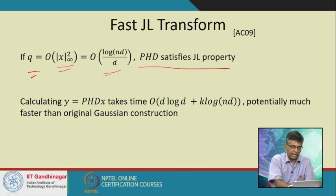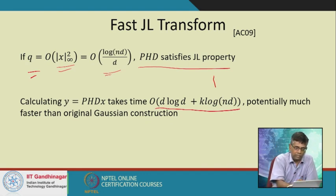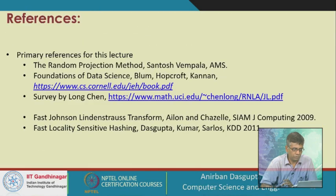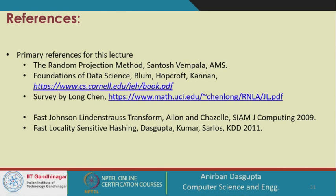Since y = HDx is dense, we apply our sparse projection matrix P on y, so the final projected vector is P·H·D·x. Choosing sparsity q ~ log(nd)/d (the max-entry-squared of y), the matrix PHD satisfies the JL length-preservation property. The total time for computing PHDx is O(d log d + k·log(nd)), which is much faster than the Gaussian projection's O(dk). References include a book on random projections by Santosh Vempala, Chapter 2 of Foundations of Data Science by Blum, Hopcroft and Kannan, a survey by Long Chen, and the FJLT paper in the SIAM Journal of Computing. The next lecture will cover fast locality-sensitive hashing.